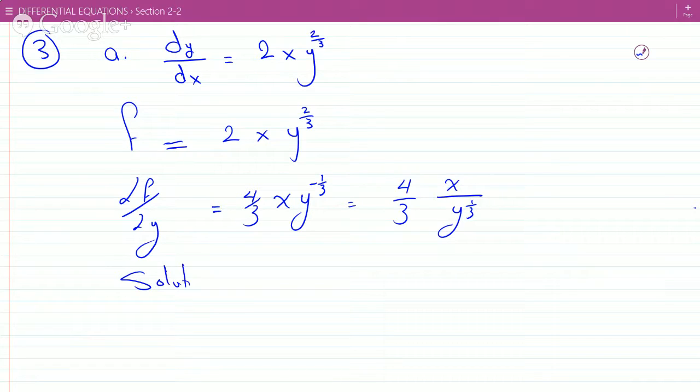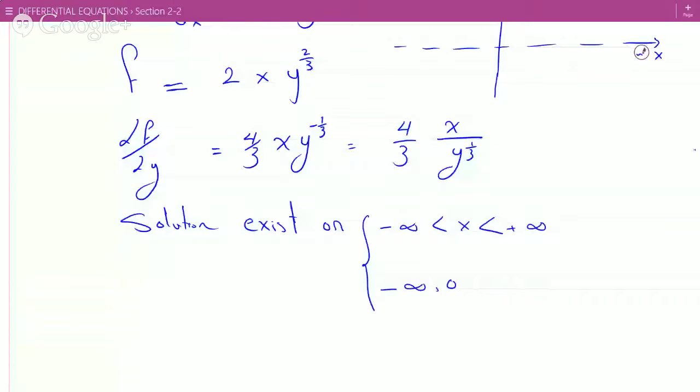So solutions exist on... So basically you'd have to exclude this axis. So technically your x could be anything. But for your y, so I'm writing the rectangular region now. So you'd have to go minus infinity to zero, union, zero to infinity with y greater than zero.